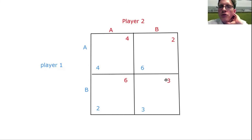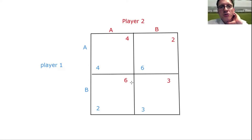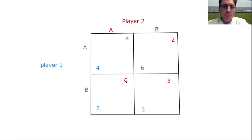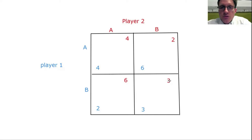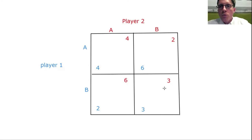Suppose player two were to deviate and instead of choosing strategy B, were instead to choose strategy A. Then their payoff would change from three to six. Since we assume higher is better, that would indicate a higher payoff. So this box cannot possibly be a Nash equilibrium, because at least one of the players would want to deviate. The only way it's a Nash equilibrium is if none of the players would like to unilaterally change their strategy, assuming the other player's strategy is fixed.